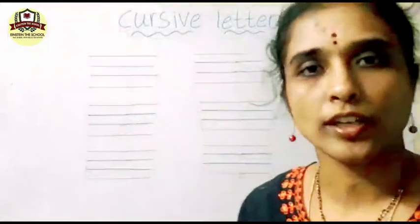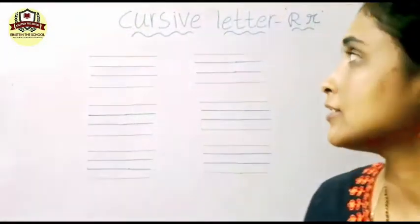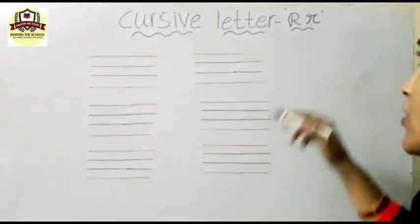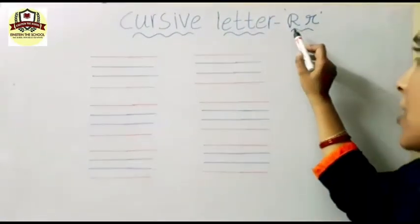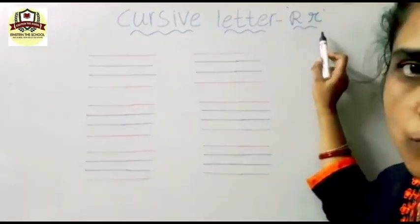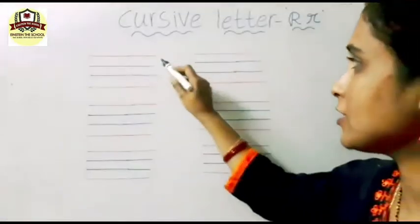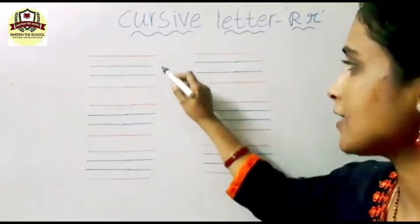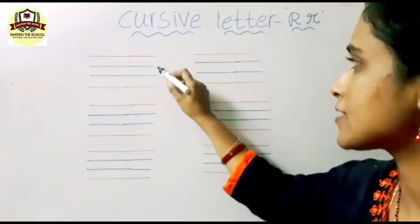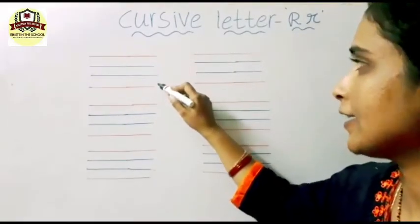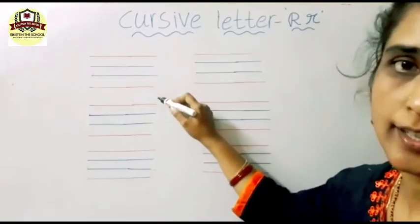Good morning children. Today we will learn cursive letter capital R and small r. These are the four lines: capital line, base line, base line, and tail line.